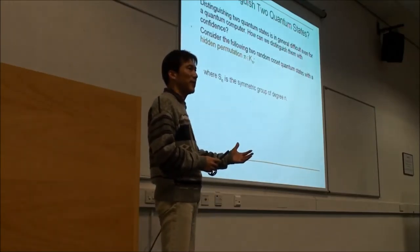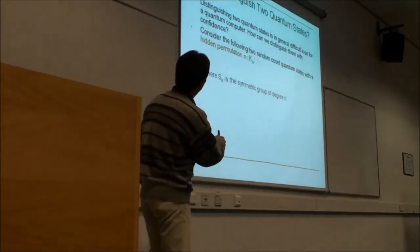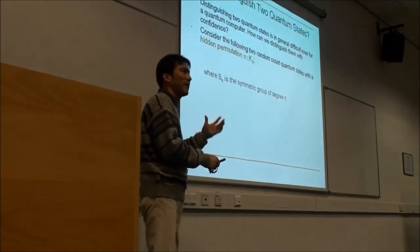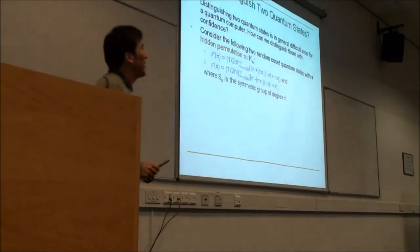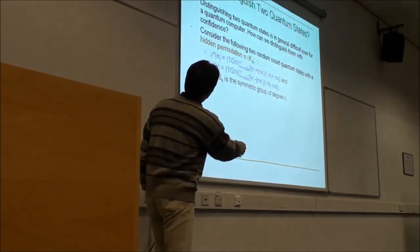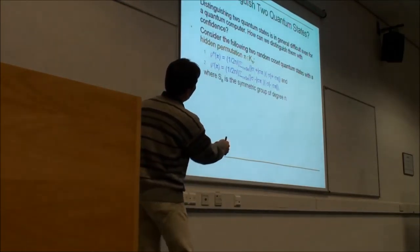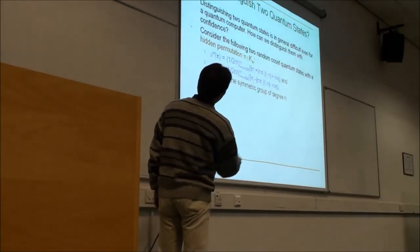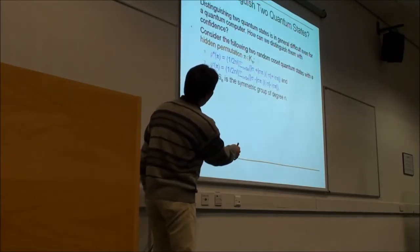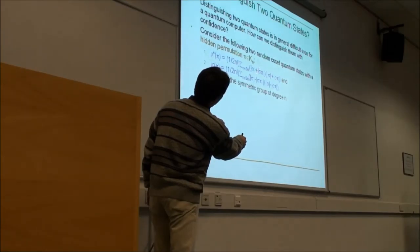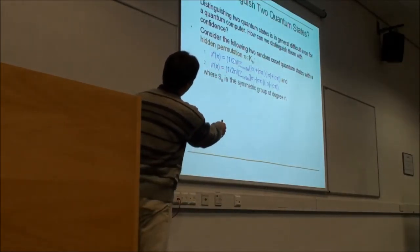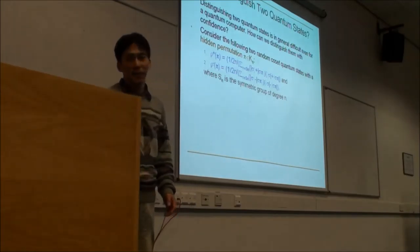Now we go back to the notion of indistinguishability: the problem of distinguishing two quantum states. Suppose we have a permutation pi taken from K_n, and we generate two quantum states — rho plus and rho minus. They are summations over sigma across all permutations, and the only difference between the two states is the plus sign versus the minus sign. We call them rho plus and rho minus.